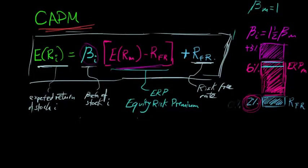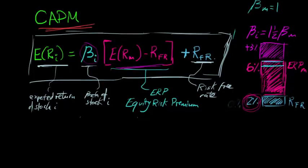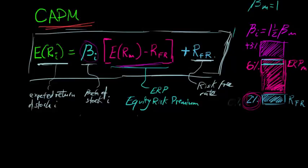What we end up with is a line in the form, and I'm going to write it below here. Here's the CAPM formula, the expected return of stock I equals the beta of I times the equity risk premium plus the risk free rate.